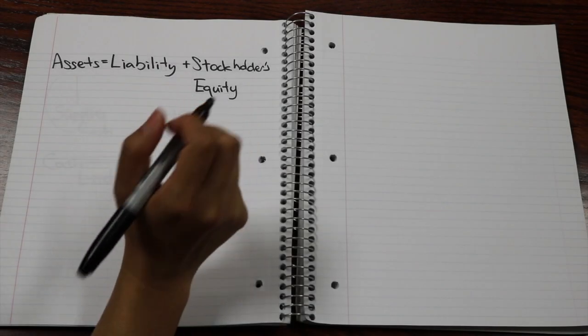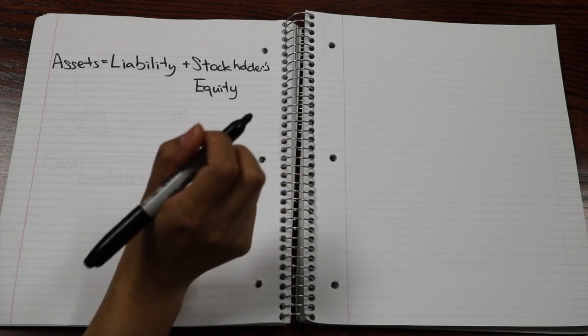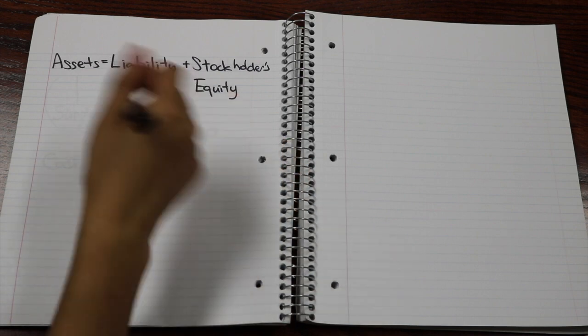When making a journal entry, the debits are usually written closest to the left-hand side, while credits tend to have an indentation. This time, let's say I paid with cash. This is what my journal entry would look like.